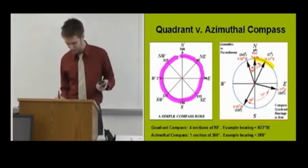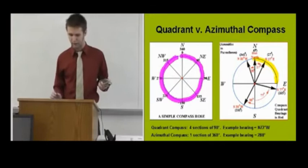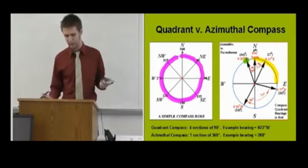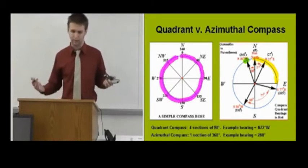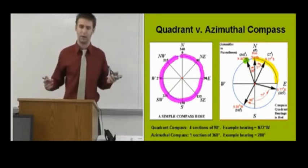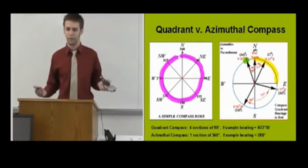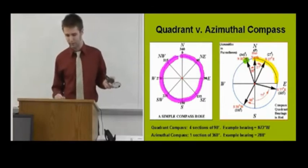So for example, a bearing of north 20 west would put you right there. North 20 west would be the same bearing as 340. So if you're talking to somebody or your field partner and you have different compasses, it can be slightly inconvenient, but eventually you'll get quick at making back-of-the-envelope calculations to convert between the two.